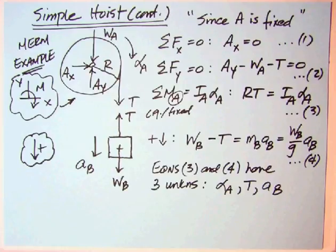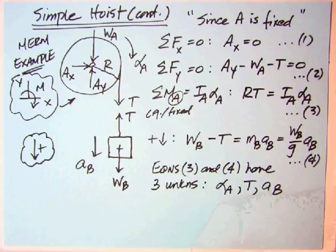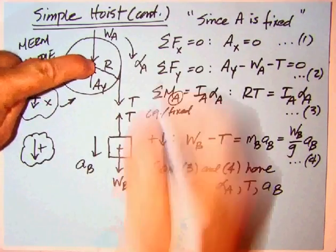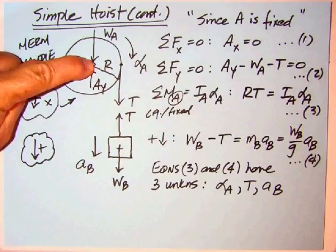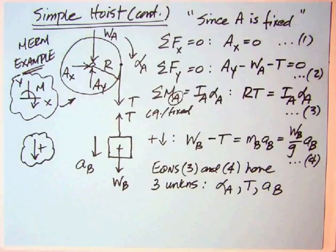We need a third equation. When you do the equilibrium first, it tells you what you need. You need some relationship between alpha and A sub B. We've got motion in a circle, so a point on the rim of the pulley is going to have an acceleration of R alpha, and that's got to match A sub B or the cable is going to break or buckle. There's our third equation.